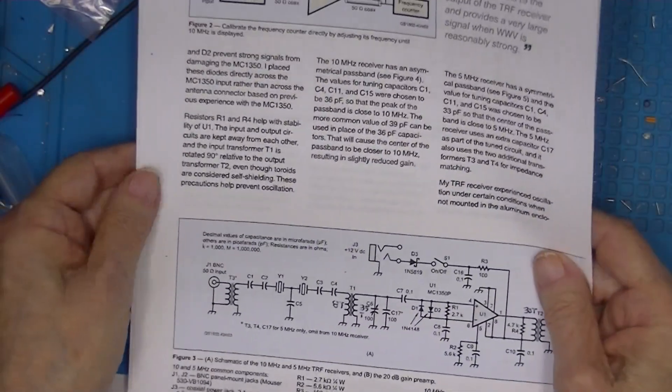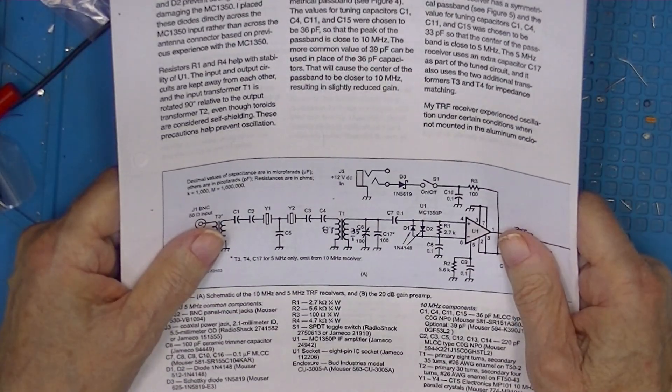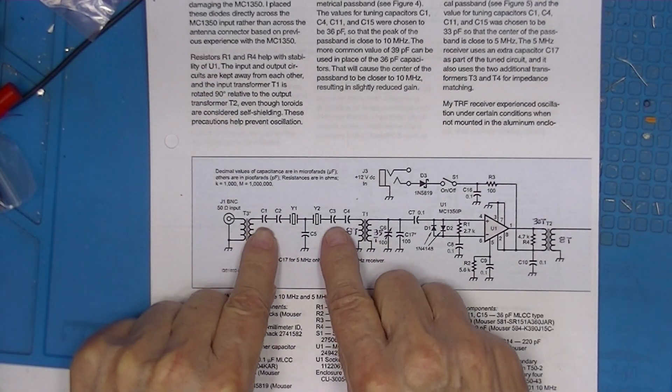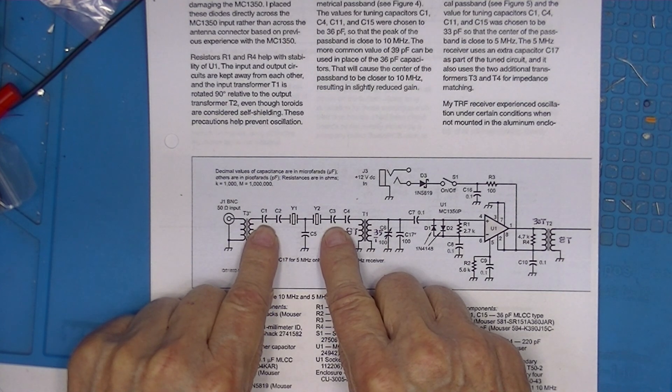I've got some piston trimmers. I think they're 2 to 10, 2 to 40 picofarads. C1 and C3 will shift the bandpass and perhaps level it.